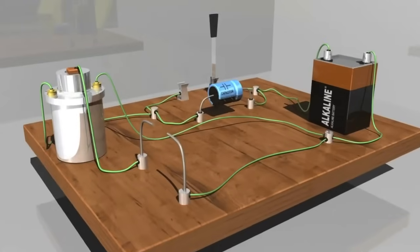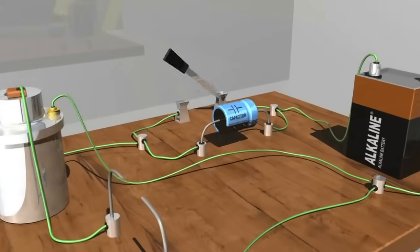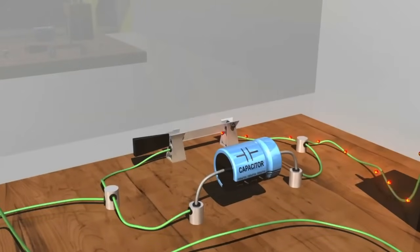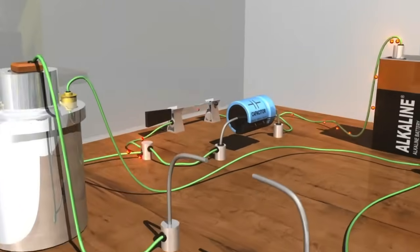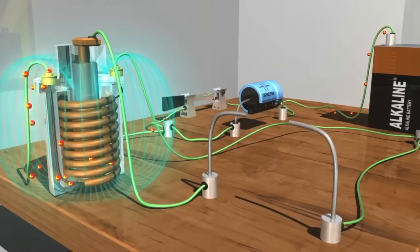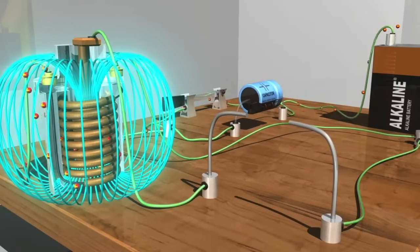First we will close the knife switch to create a circuit that includes the battery and the induction coil. Although electrons move from negative to positive, the convention is to think of electrical current as moving from positive to negative, so that's how we'll show it here. As current flows to the primary coil, a magnetic field gradually builds up around it, as well as around the secondary coil housed inside.